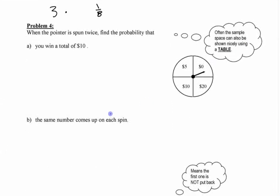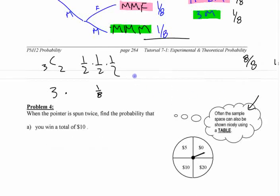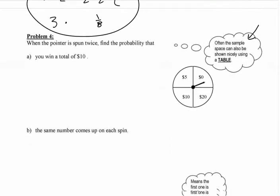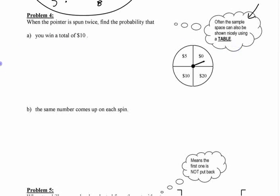This last question is here to give you a different way of constructing a sample space. Again, all we're doing at this point is counting outcomes. We're not doing any shortcuts yet. A table is a good idea. A table is a good way if you have two different things involved, like two spins. This spinner here is spun twice. The reason a table is good for things involving two choices is because on paper you can make a two-dimensional table really easily.